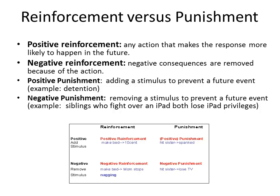Positive punishment is adding a stimulus to prevent a future event — for example, if you hit your sister you get spanked, or if you mess up in school you get detention. Negative punishment is removing something to prevent future events — if you hit your sister you lose TV privileges, or if siblings fight over an iPad they both lose iPad privileges. You're not getting spanked, but you're losing something — and that is not a fun punishment at all.